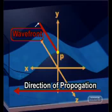In the first lesson in our series, you learnt that a three-dimensional wave has a wave front, which is at right angles to the direction of propagation of the wave. Remember, a wave front shows all the points of the wave that are in phase with one another.